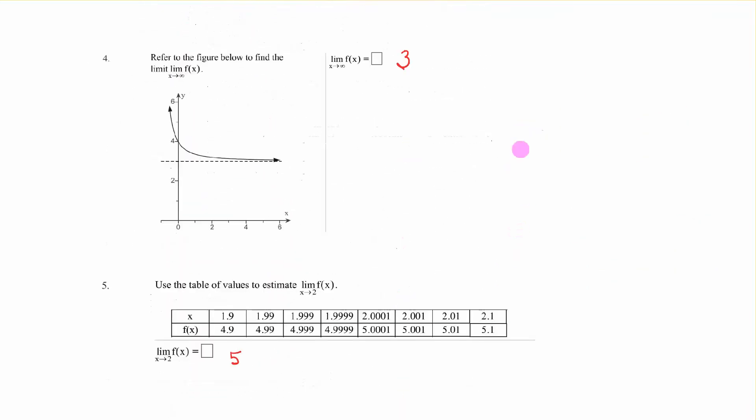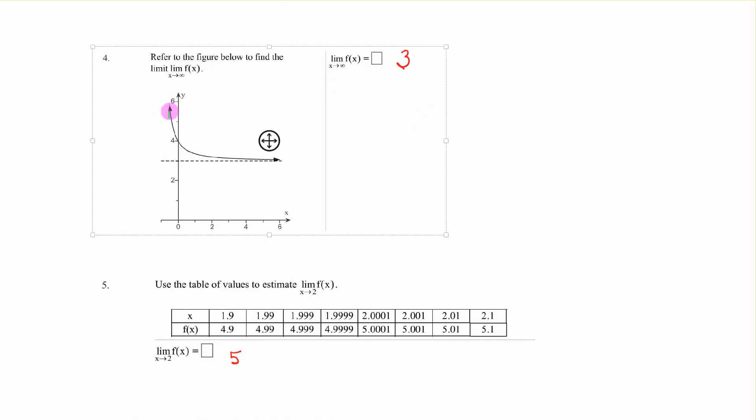All right, let's go to number 4. The limit as x approaches infinity. So here's our graph. And sometimes you have to just follow the graph. Where's it going? Where's it going? That y value is 3, so it looks like it's approaching 3.